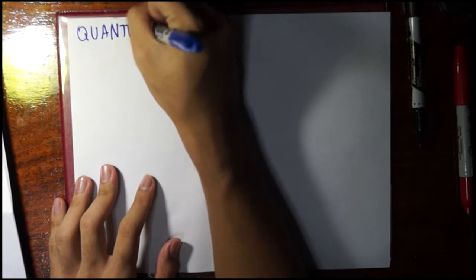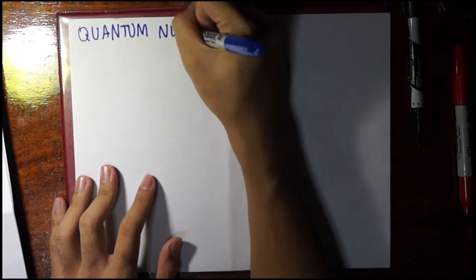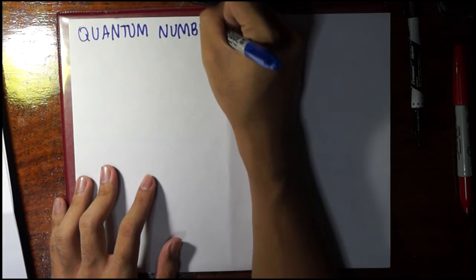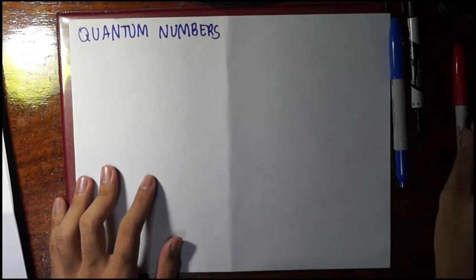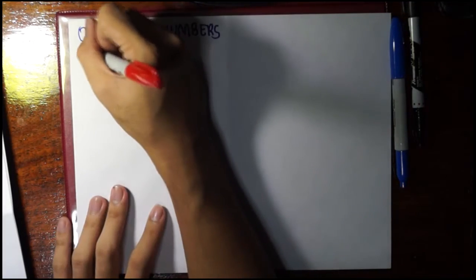The next thing we're going to review is the quantum numbers, because as you will see later on, we would be able to use this for some topics. Generally there are four. The first one is the principal quantum number.